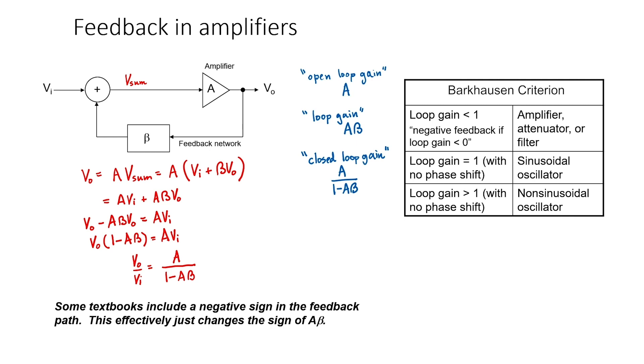If the loop gain is exactly 1, then we don't need to have an input. We have an oscillator. If the loop gain is greater than 1, then the amplifier will be saturated, and we'll end up with a non-sinusoidal oscillator. This is how the Berkhausen criterion is defined.